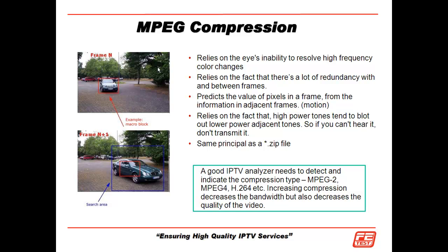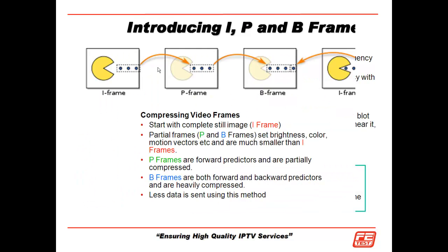So a good IPTV analyzer needs to detect what type of compression you're using, be it MPEG-2, MPEG-4, or H.264. Because if we increase that compression, we're going to decrease the bandwidth, and that's also going to decrease the quality. If we look at the mechanics behind that compression, we have to introduce something called I, P, and B frames — or in the case of high definition, we also have SI and SP frames.